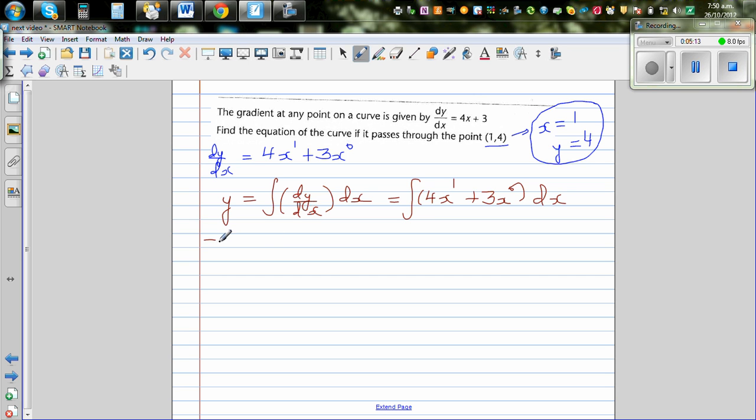So you can say this implies y is equal to 4x squared over 2 plus 3x to the power of 1 over 1 plus c. So you can say this implies, simplifying this would be 2x squared plus 3x plus c.